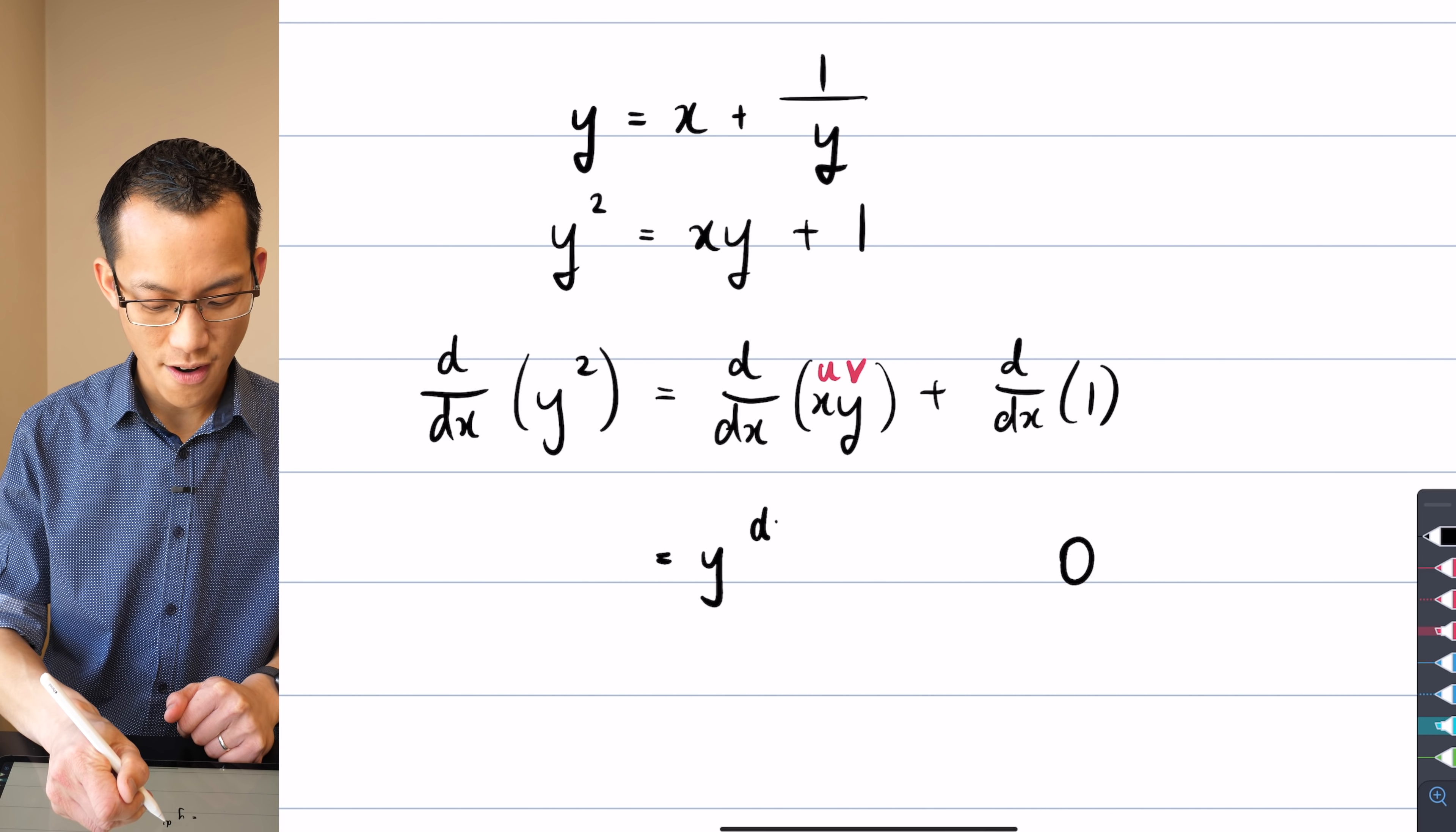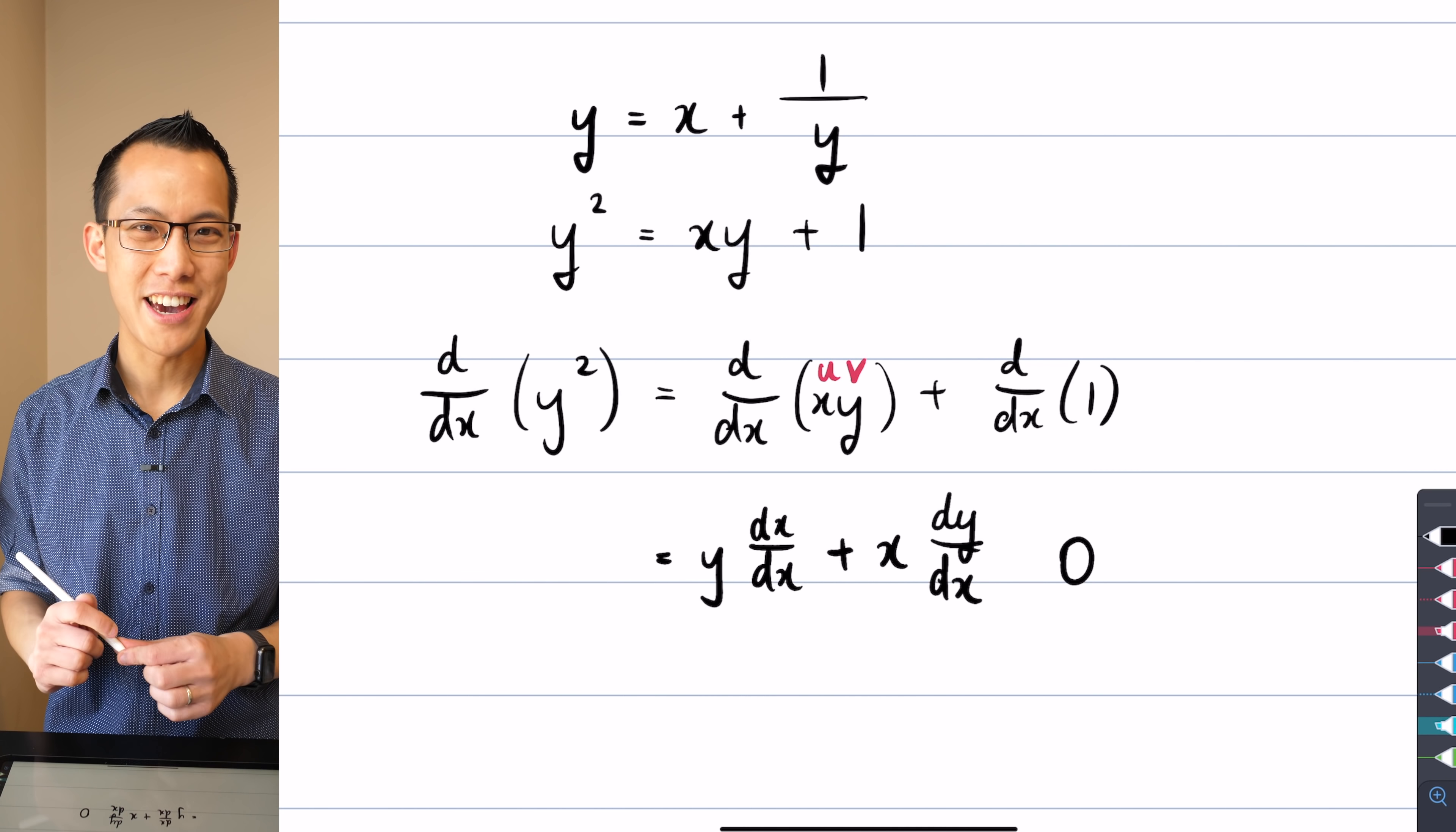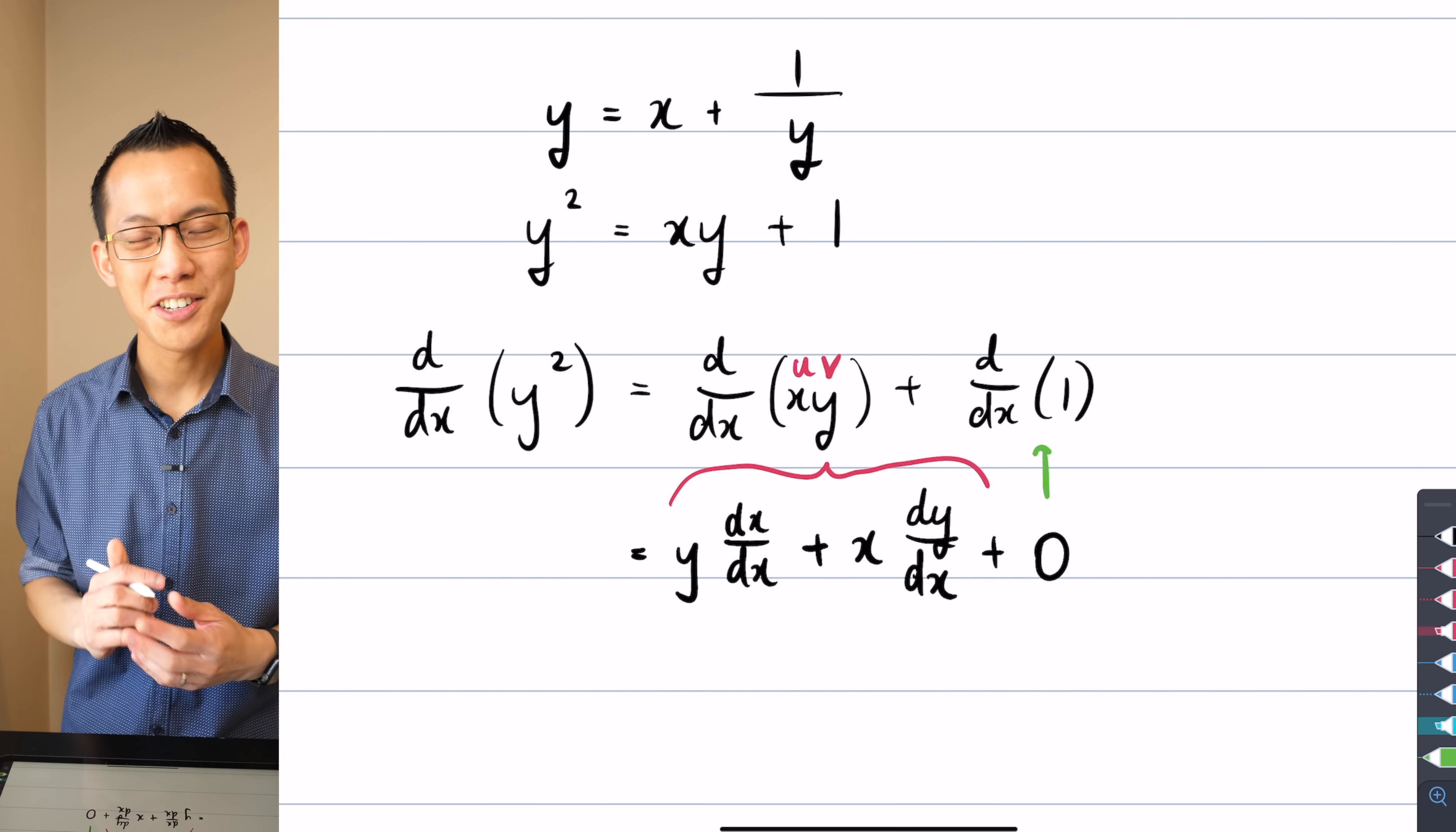But it's exactly the same as if there were a u and a v because they also stand for functions. So there'd be v u dash plus u v dash, except in this case, my v will be y. So here comes v and then u dash would be dx on dx because it's the derivative of x. And then I add u v dash. So here comes u and then v dash. So you can see I've got this dy on dx appearing sort of on the side.